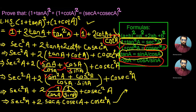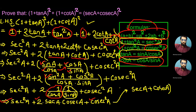Now we compare sec² a + 2 × sec a × cosec a + cosec² a with the algebraic identity a² + 2ab + b², which equals (a + b)². Recognizing sec a as 'a' and cosec a as 'b', this expression equals (sec a + cosec a)², which is exactly the right-hand side of the equation. So here we complete the solution. Thank you for watching the video.